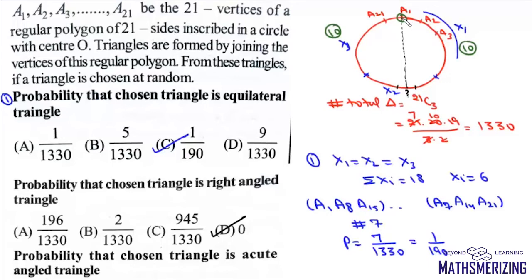Now number of obtuse-angled triangles that can be formed having one root vertex with a1 will be 2 into 10C2, which is 90.